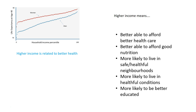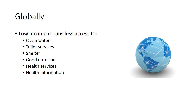You're also more likely to be better educated if you are of higher income. But globally, low income also means you have less access to many things important for health. Poor people have lesser access to clean water, and therefore they're more likely to get waterborne diseases like diarrhea. In fact, diarrhea kills millions of children around the world every year — it's one of the biggest killers of poor children, and it's entirely preventable just by cleaning water or having access to cleaning materials.